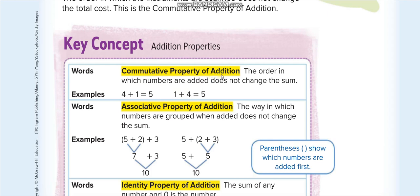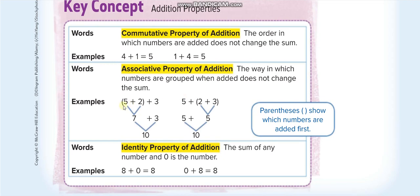Now the second one: associative property of addition. In associative property we can change the order of the group. Both sides have the same numbers — 5, 2, and 3 — but here the brackets are around 5 and 2, and here they're around 2 and 3. Solving the first: bracket gives 5 plus 2 equals 7, then 7 plus 3 equals 10. The second: bracket gives 2 plus 3 equals 5, then 5 plus 5 equals 10. Both ways give the same answer.